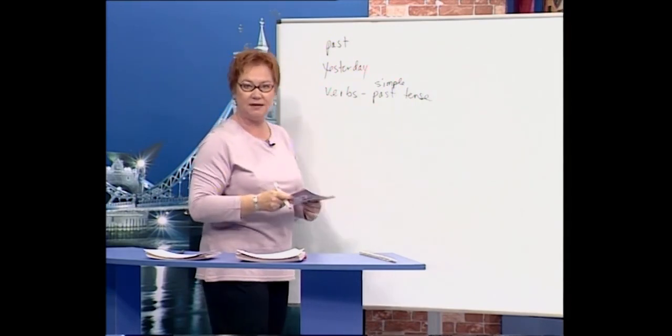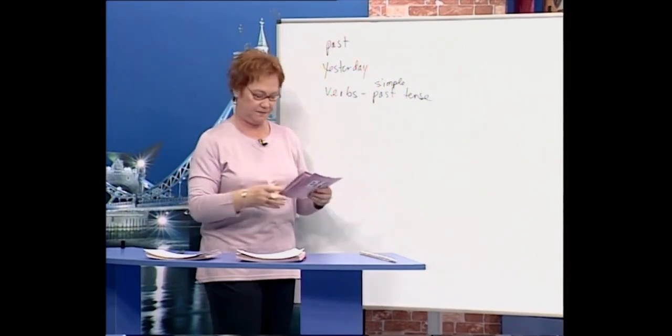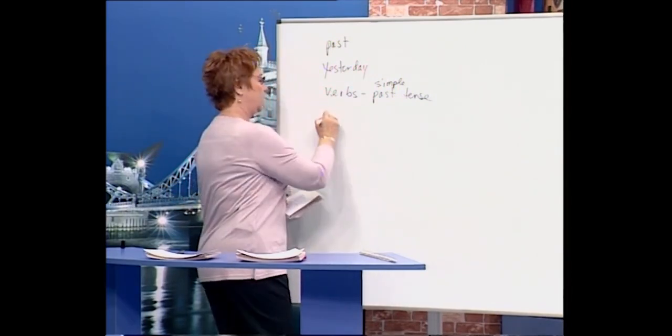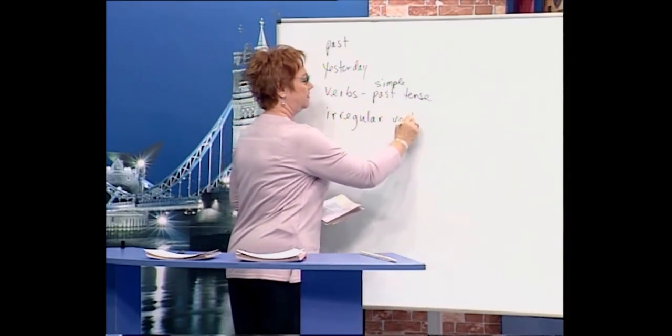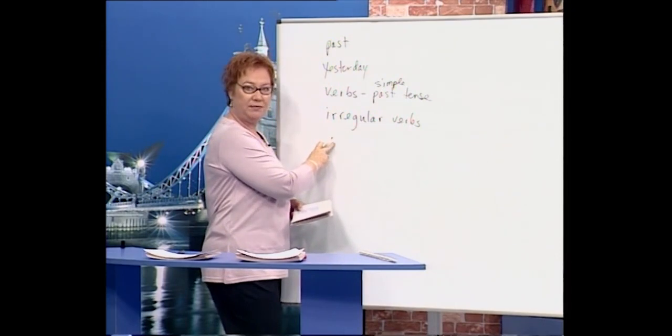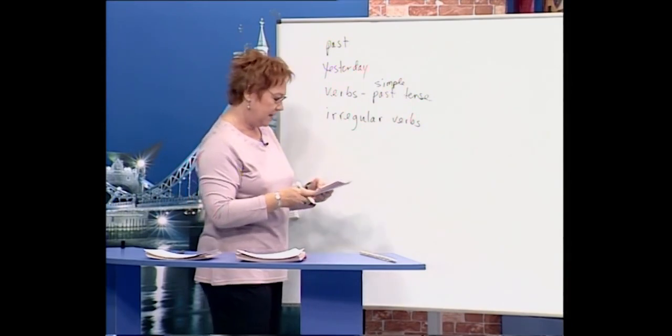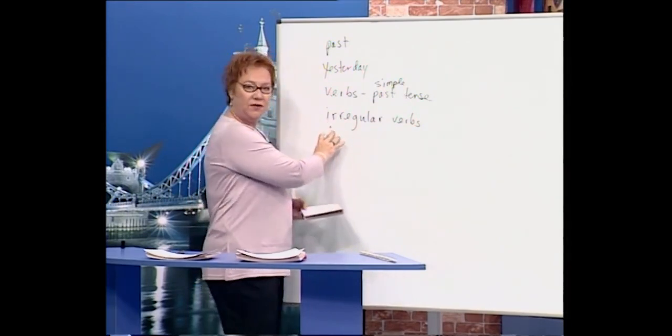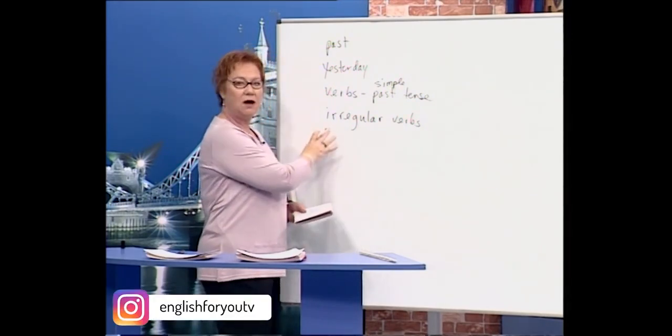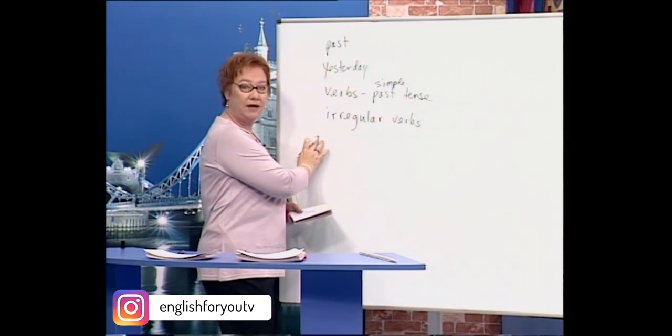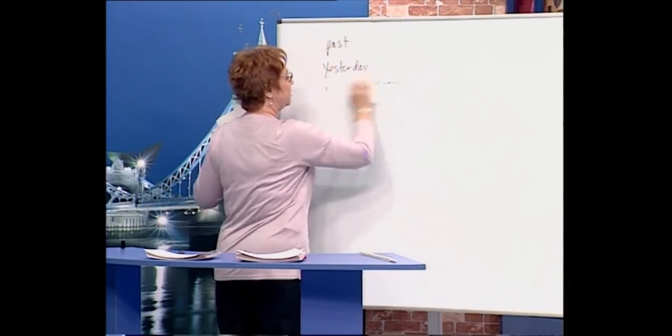We use the simple past tense to talk about events in the past that are finished. Some verbs in English are called irregular verbs. These are special verbs we saw some of them in the present tense. Now irregular verbs change in the past tense, and today we'll talk about a few important irregular verbs.